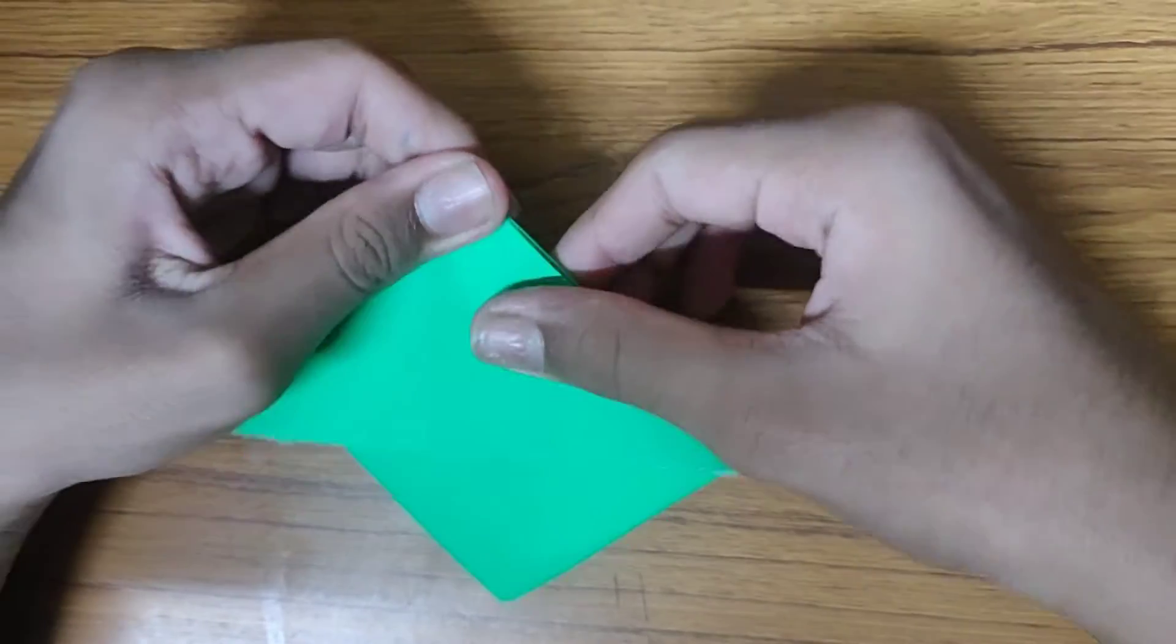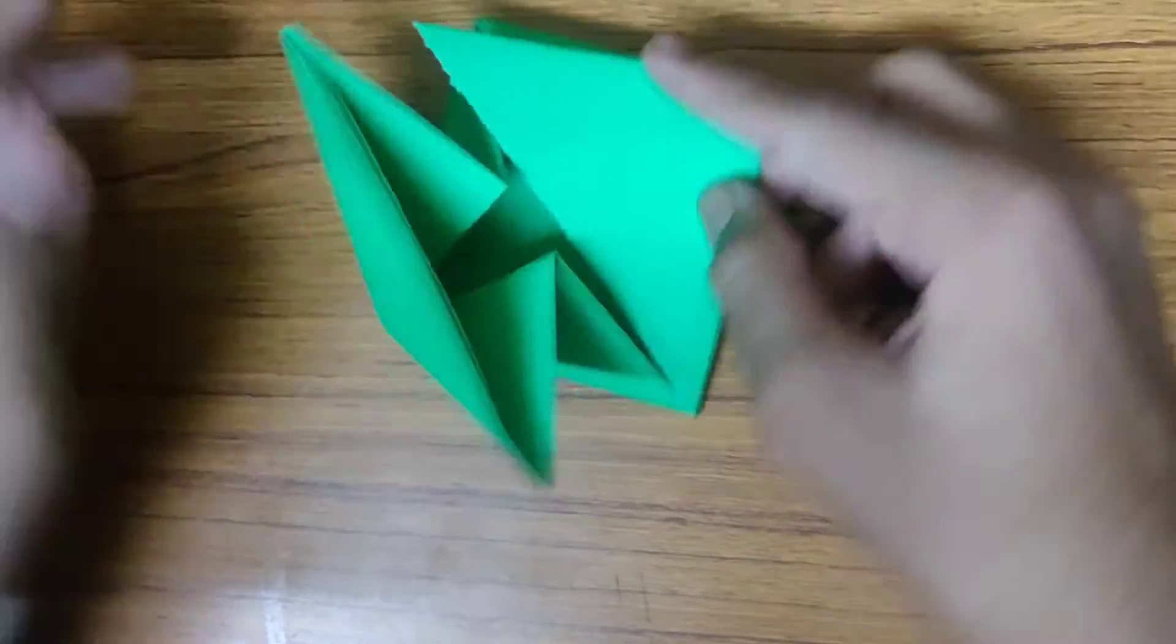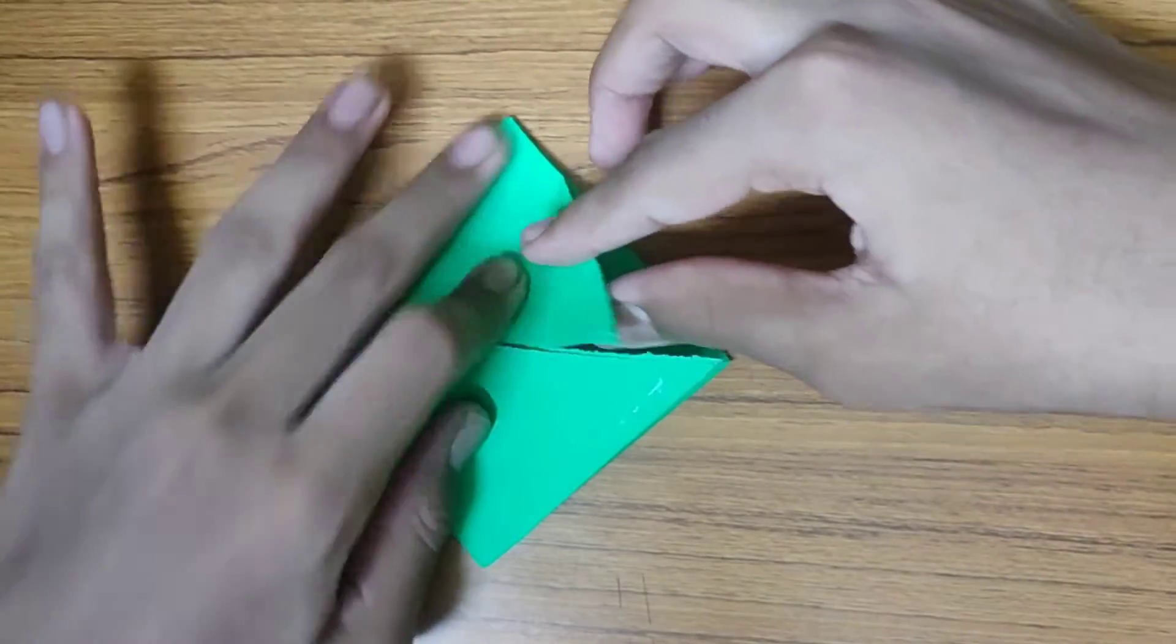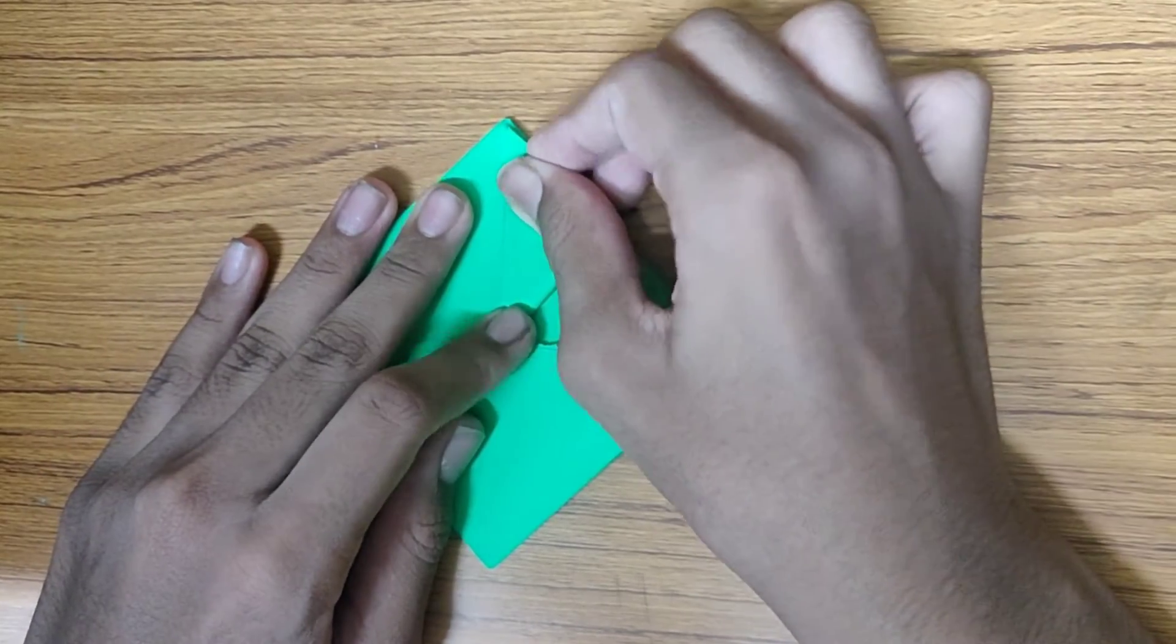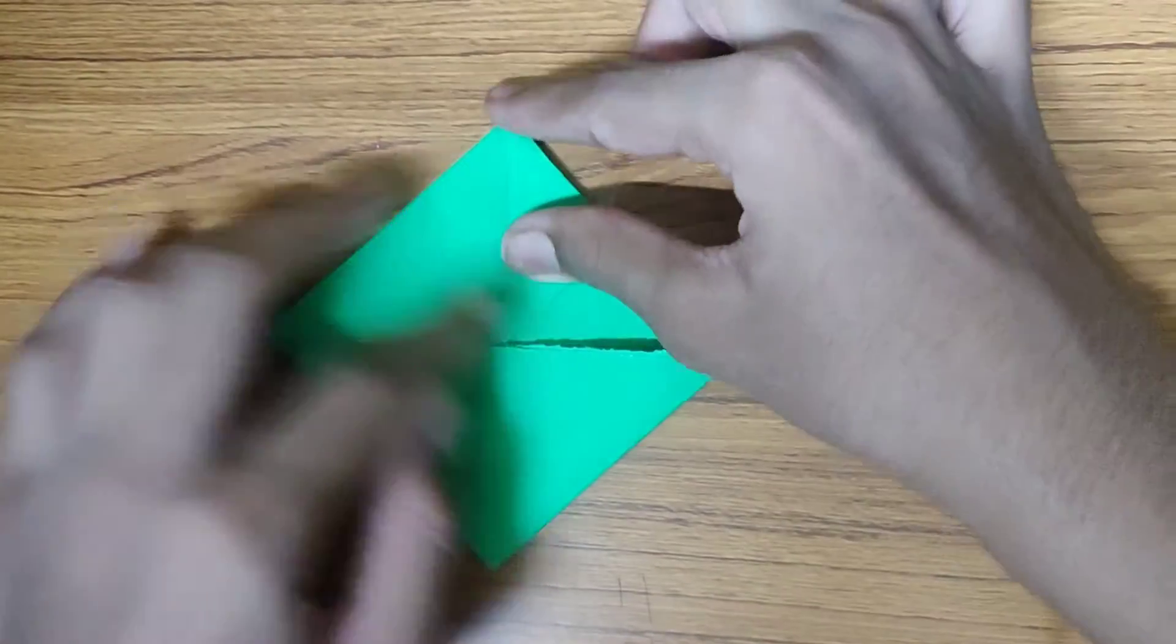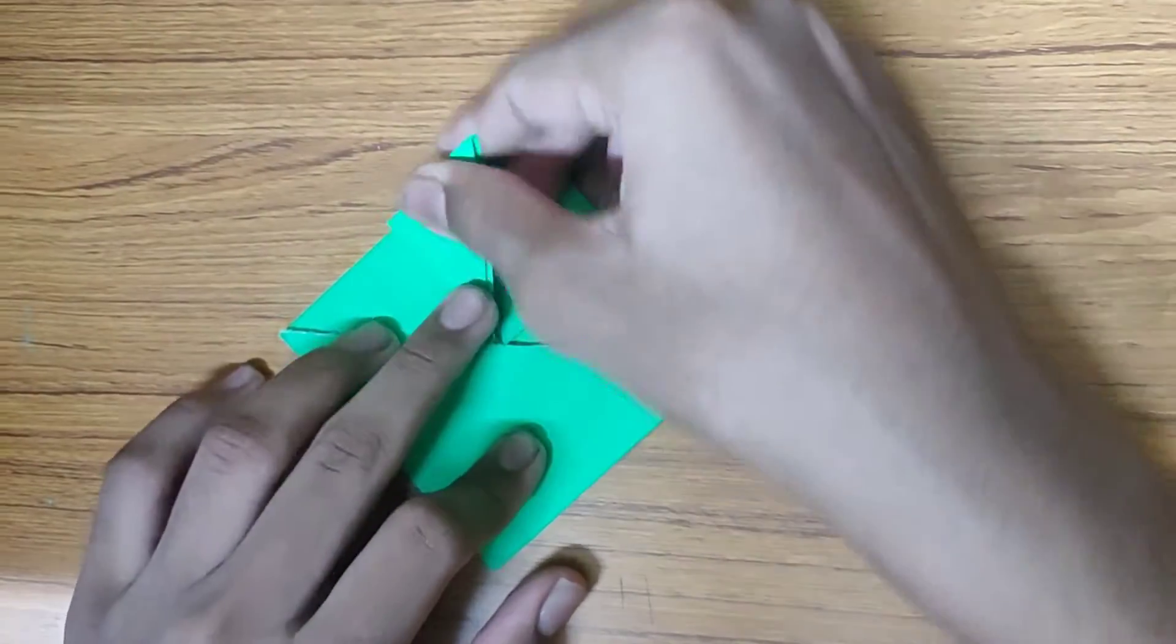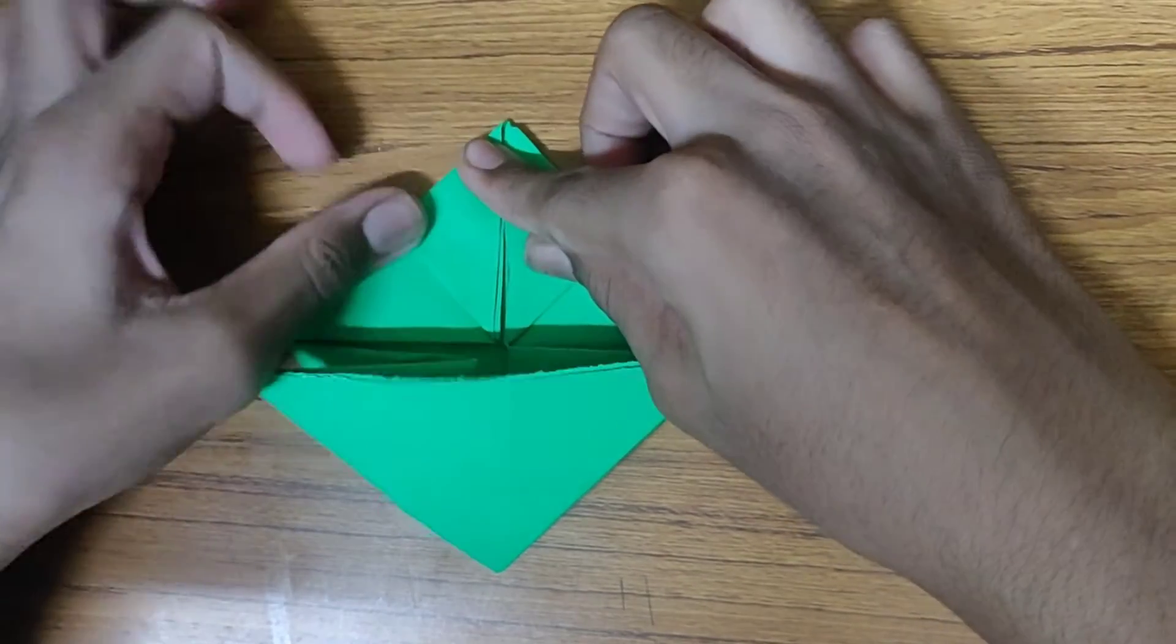What I really love with this origami frog is that, friends, you can quickly make it and then start your game. Now let's fold this flap like this, towards the center line. Repeat the same. Like this, crease it well.